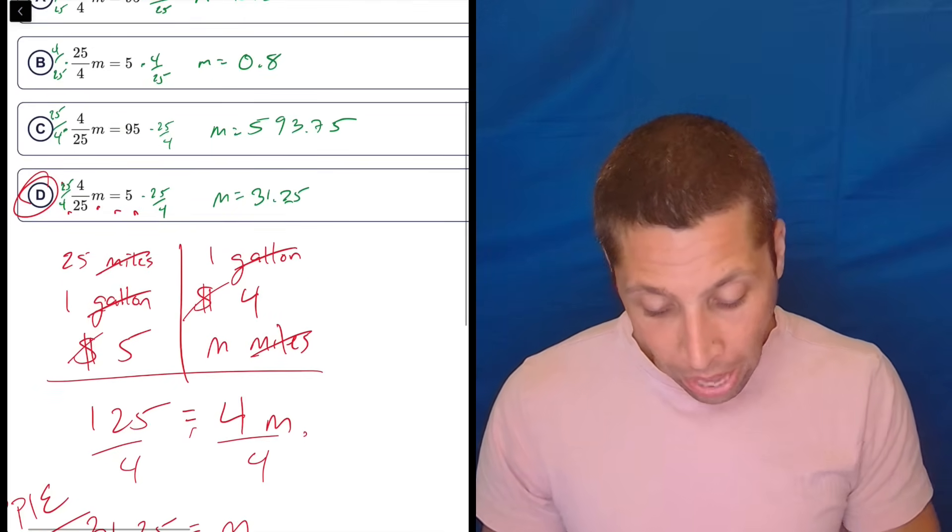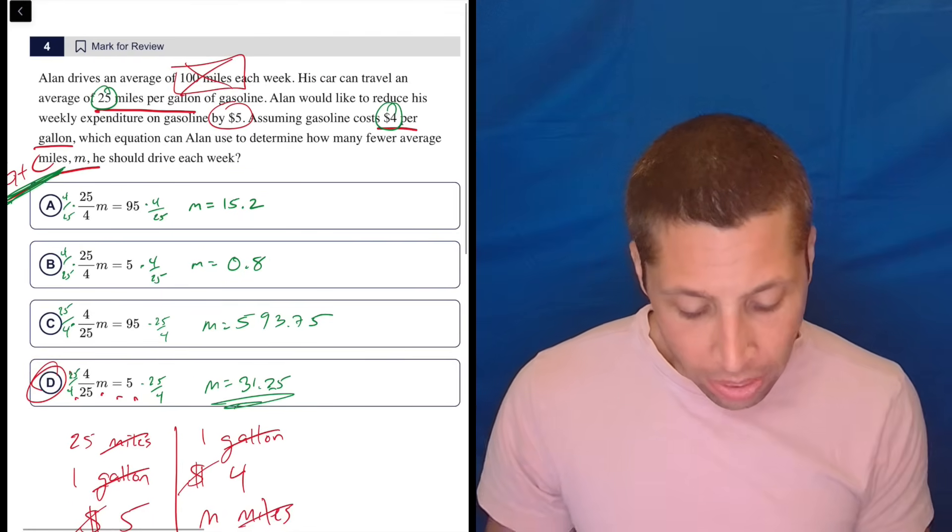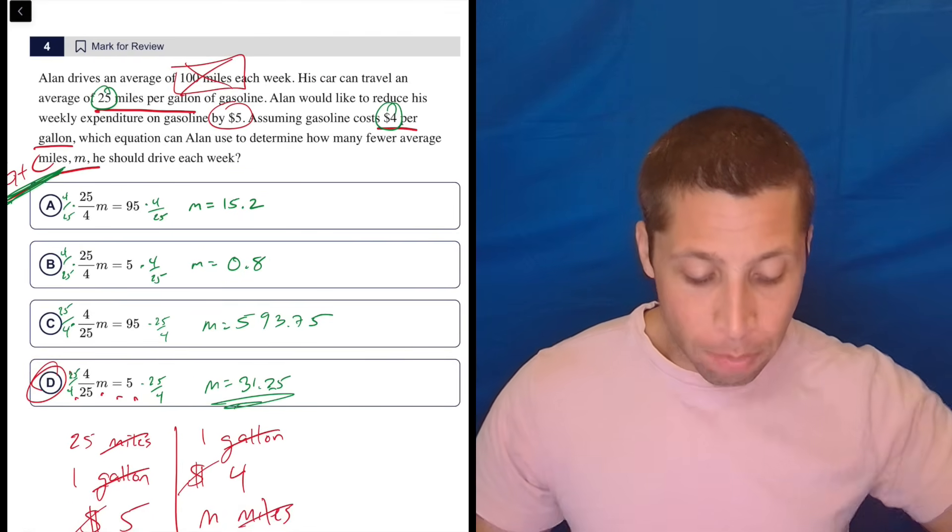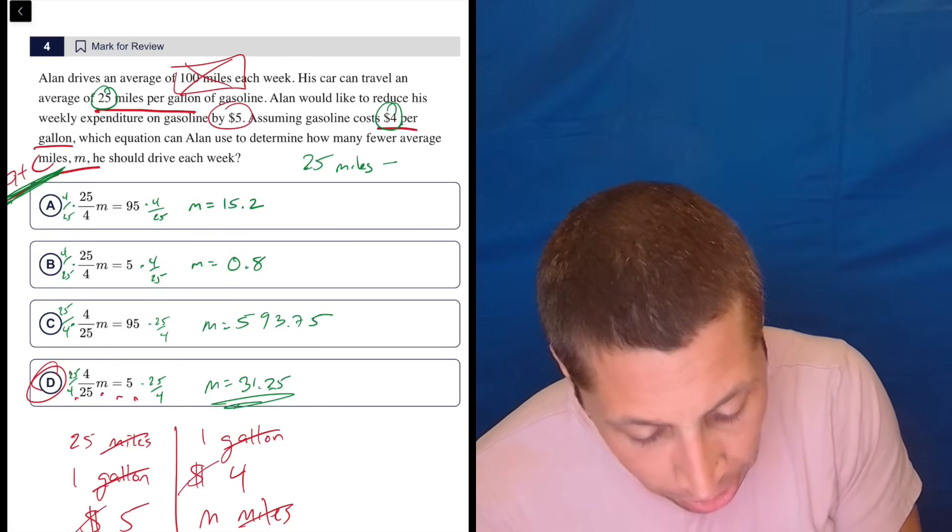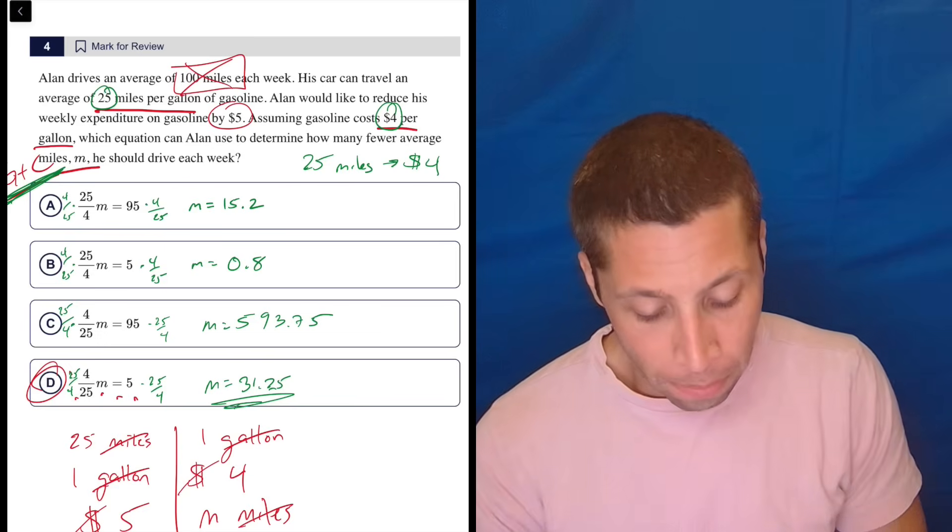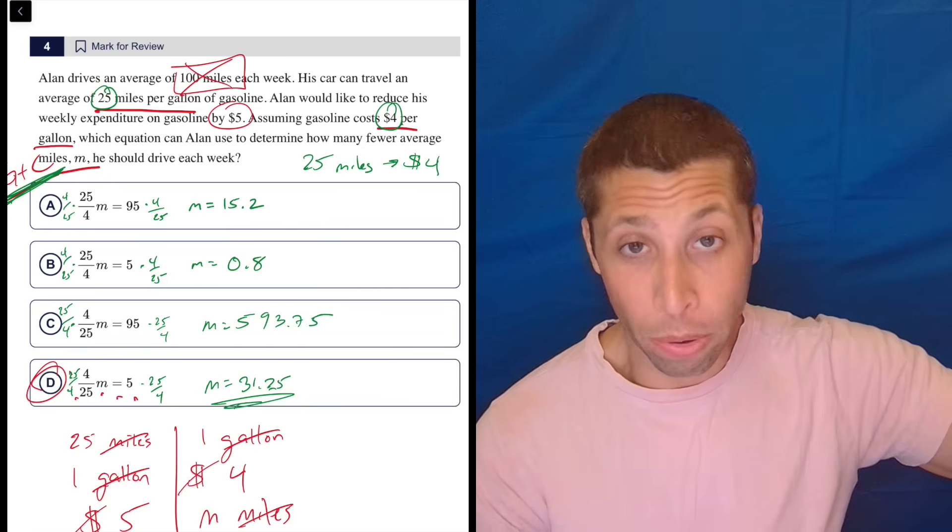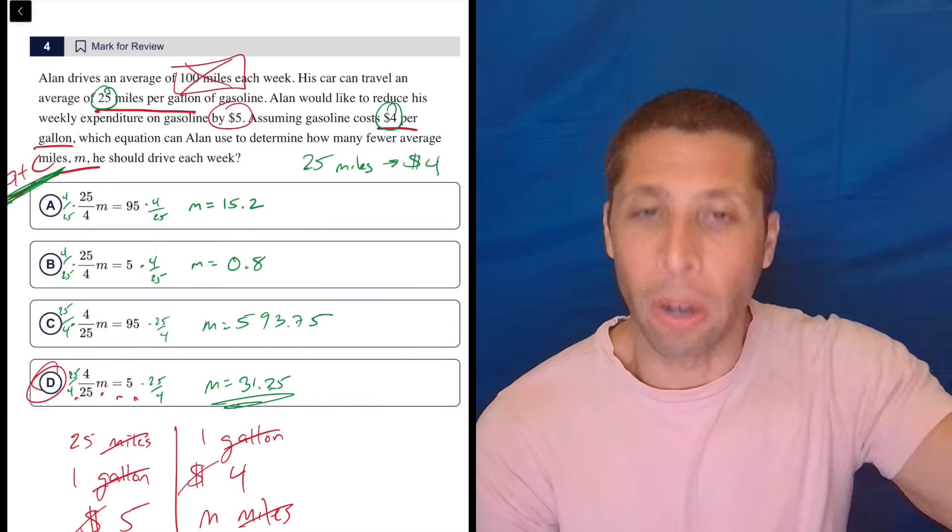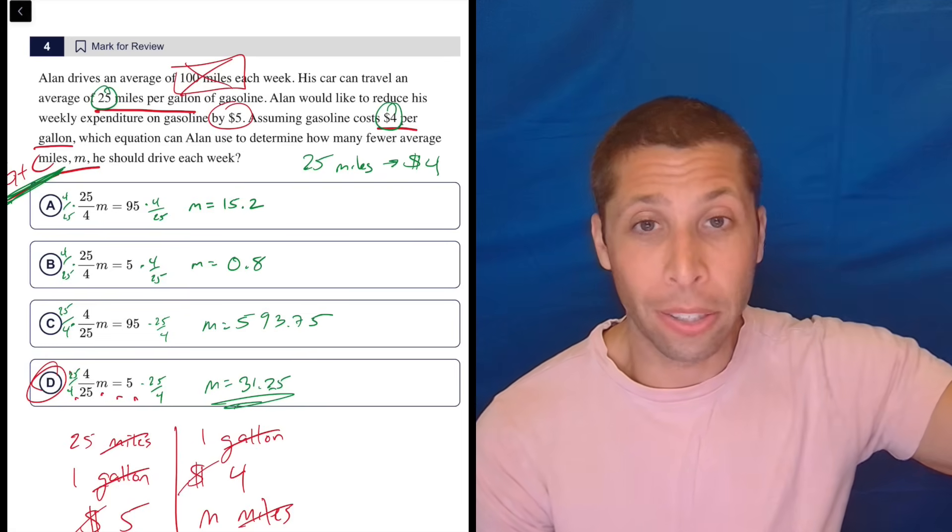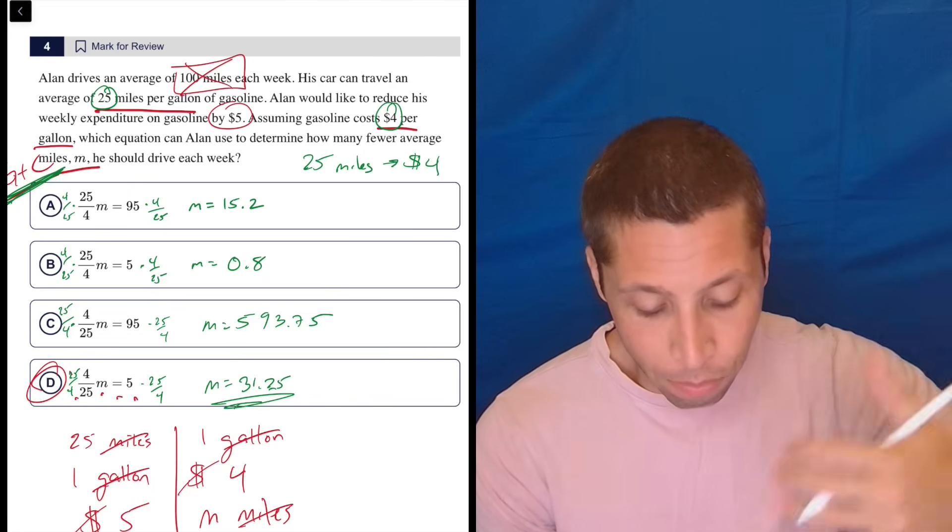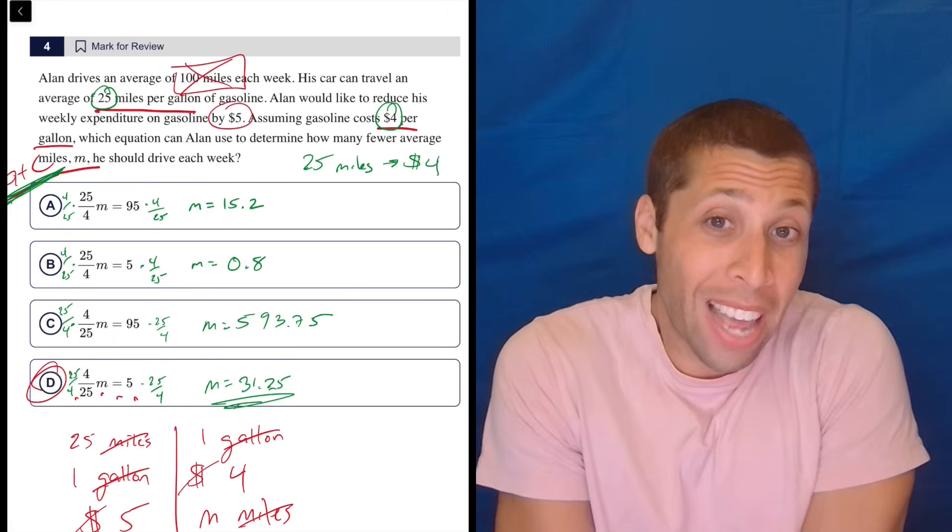It'll be the same thing here. 25, 4, 25, 4, 5 times 25 divided by 4 is exactly what we'd expect, 31.25. And that's because we solved it before. And you can even see the math is the same, right? 25 times 5 and then divided by 4. But even if we hadn't solved it, choice D is the only thing that makes any sense. Because again, 25 miles is going to cost $4. So if he's trying to save $5, he's got to be driving more than 25 miles or it's fewer, but you get what I'm saying. So he's got to be going more than 25 miles to get that $5, but only choice D really does that in any way that makes sense. C is way out there and A and B are too low. So we could just estimate this.